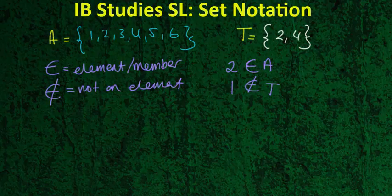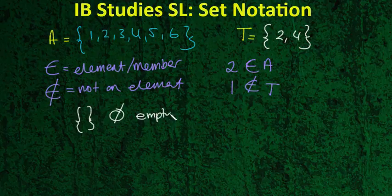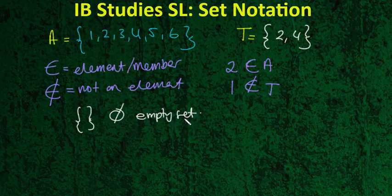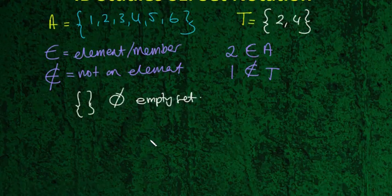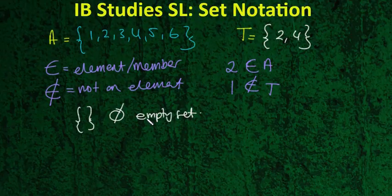Sometimes, not usual, but sometimes you might get a set that's empty. Or it's even represented by like an O with a line through it. And that just means it's called an empty set which obviously has no elements.